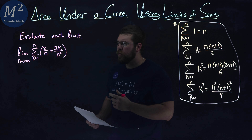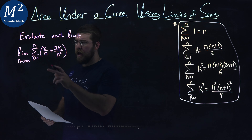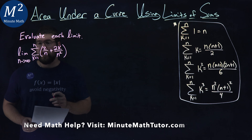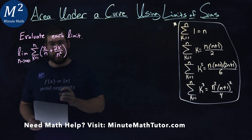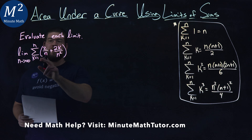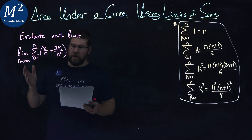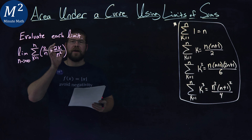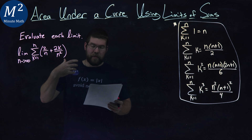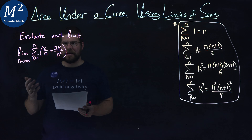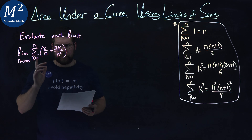We're given this problem right here: the limit as n goes to infinity of the sum from k equals 1 to n of 2 over n plus 2k over n squared. We have to evaluate this limit. First I'm going to try to evaluate the sum and then we're going to take the limit and see if we can get an answer.